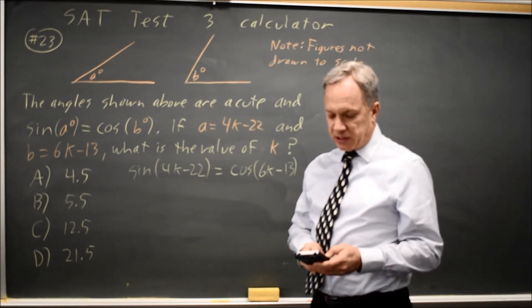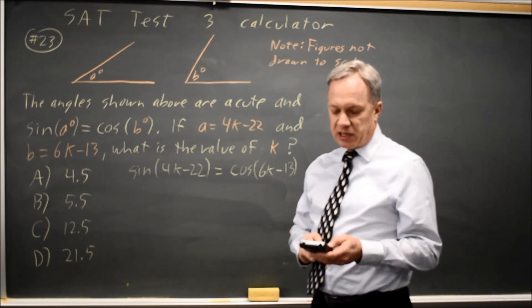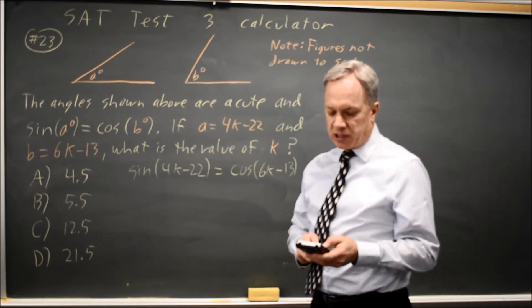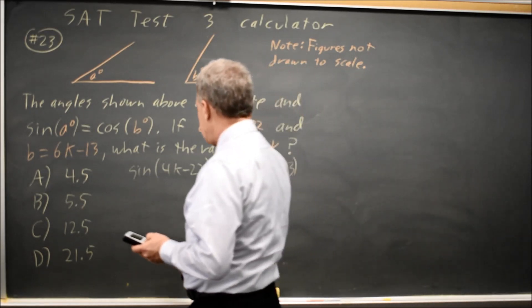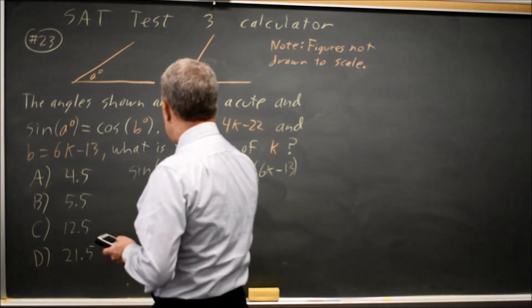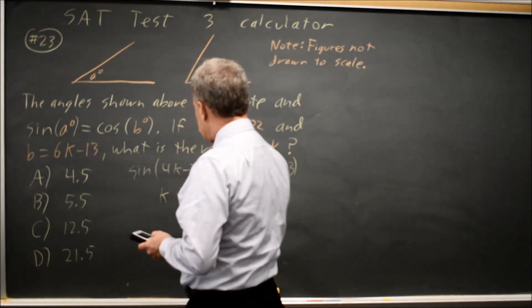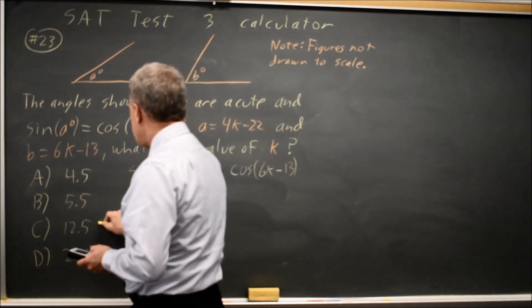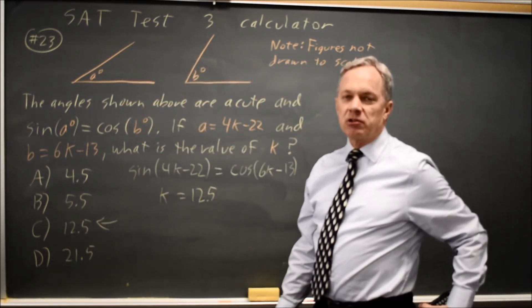And I graph it and find the intersection, which is calculate choice 5 intersect on my TI-84. Hit enter three times and the calculator says x, which is what I input for k, is equal to 12.5. So that would be choice C without doing any actual math.